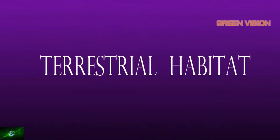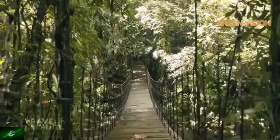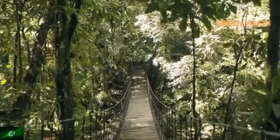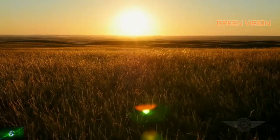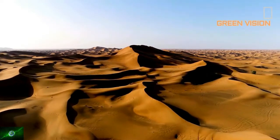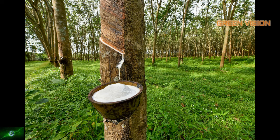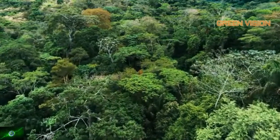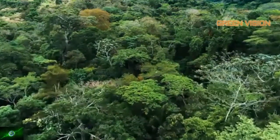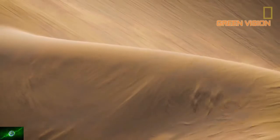Good afternoon children. We will see the continuation of terrestrial habitats. Terrestrial habitats are the ones that are found on land, like forest, grassland, and desert. They make up about 28 percentage of the entire world habitat. Examples include rubber tree, teak tree, and neem tree. Terrestrial habitat is classified into three types: desert, grassland, and forest.